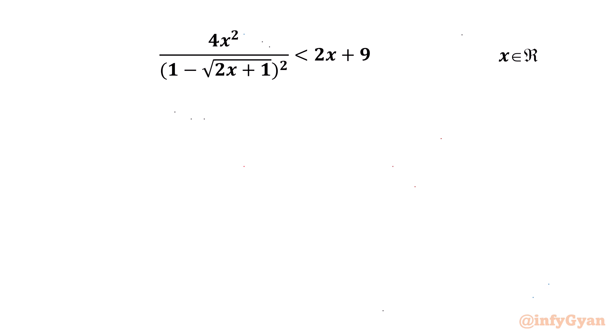Hello my dear friends, welcome back to InfiJaan. In this video we are going to take up another very interesting question from IMO. We are going to solve one inequality: 4x² over (1 − √(2x+1))² less than 2x + 9, for the real values of x.